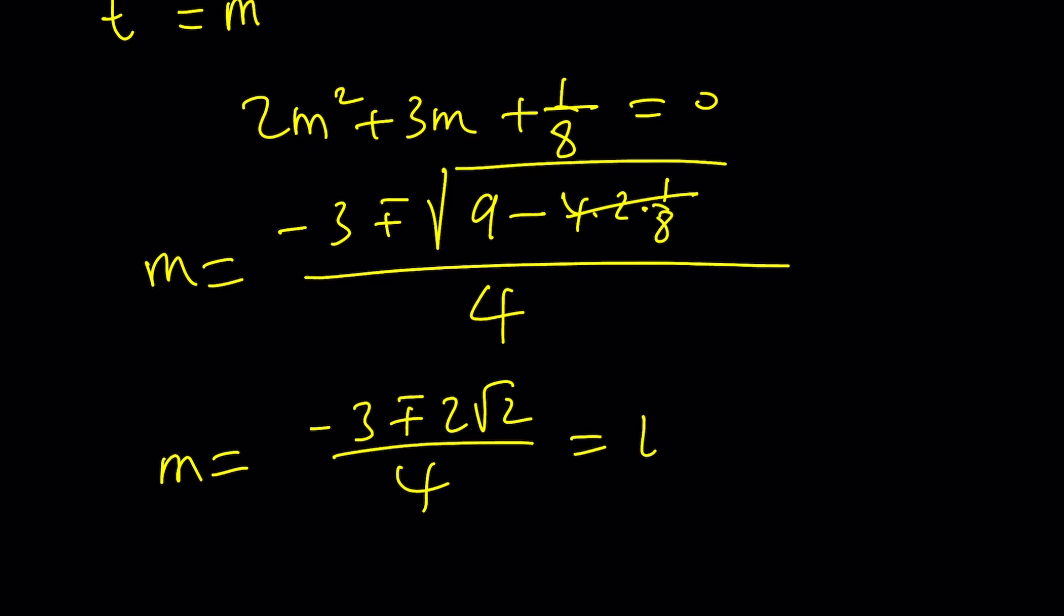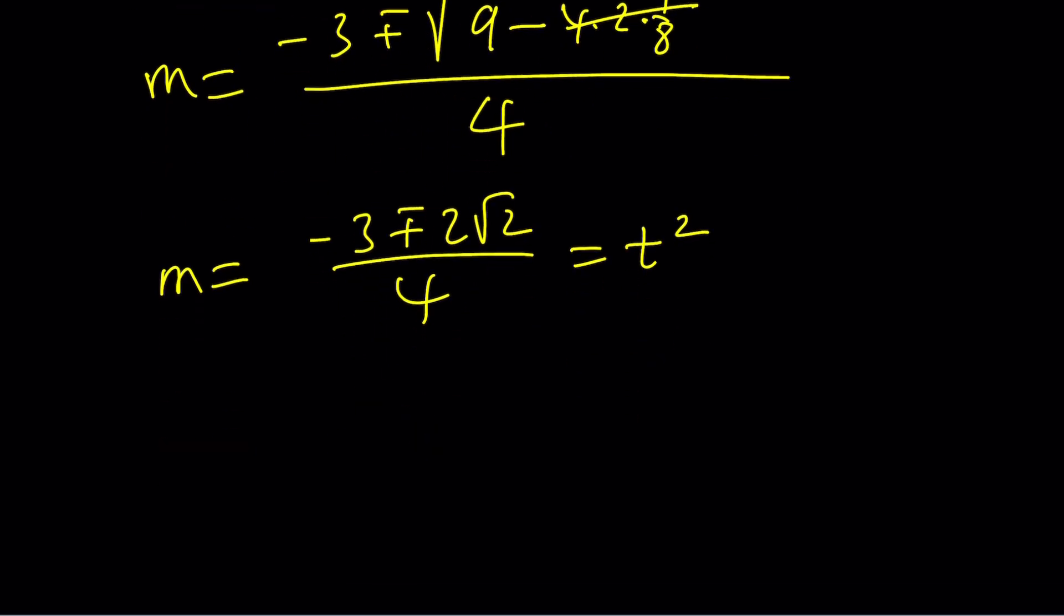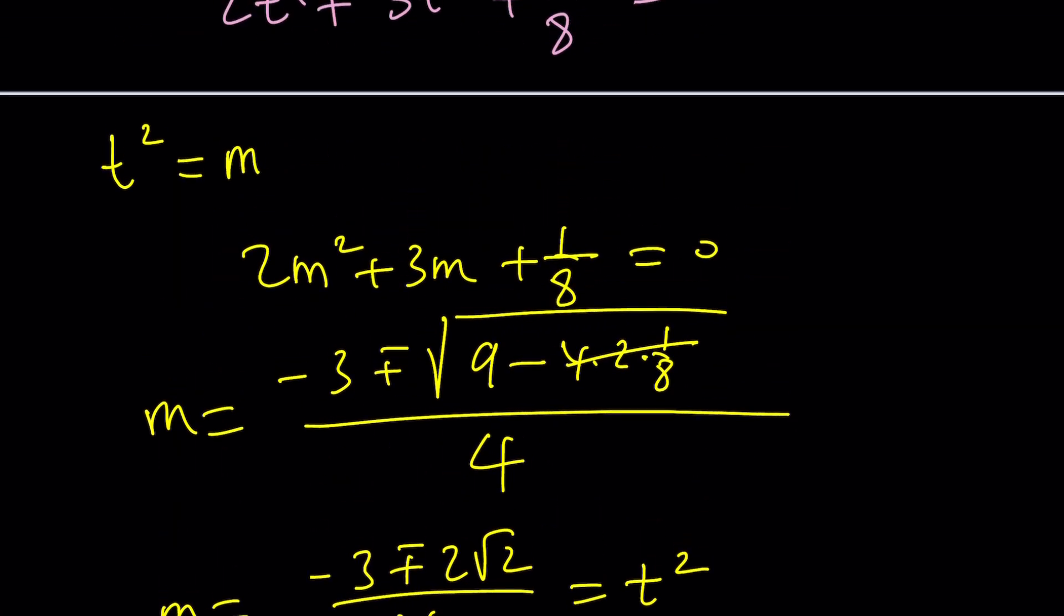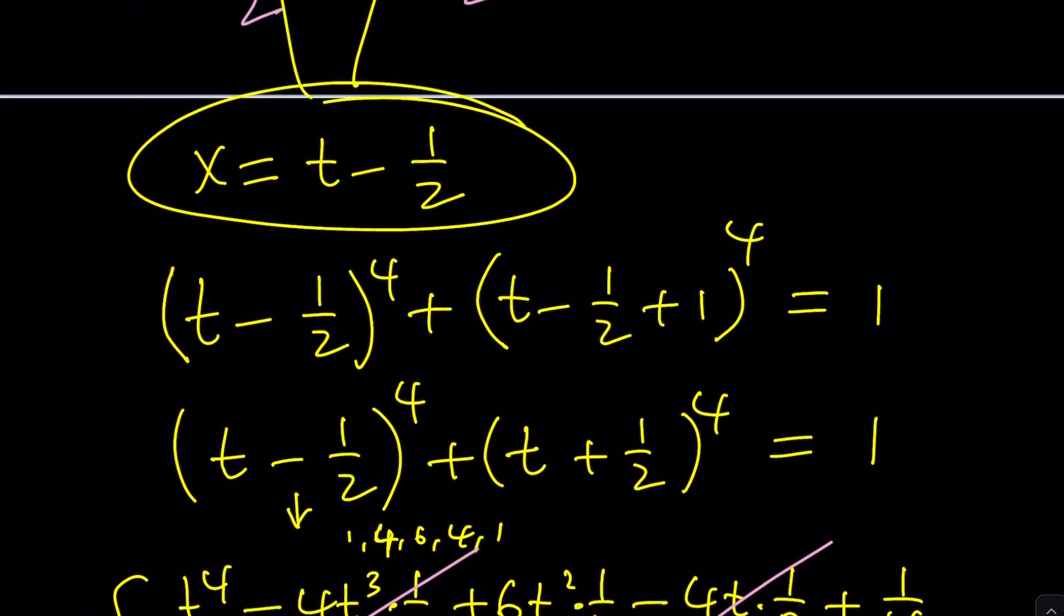But m is t squared. You've got to be very careful here because negative three minus two root two does not have a square root. Uh-oh, that's very interesting, right? So we're going to get some complex solutions from here, which I'm going to show you. But after finding the t values from here, from this equation, you should go for the x value and you just have to subtract one half from it.